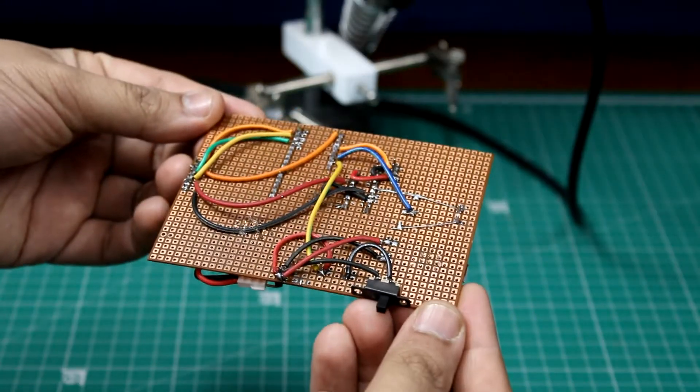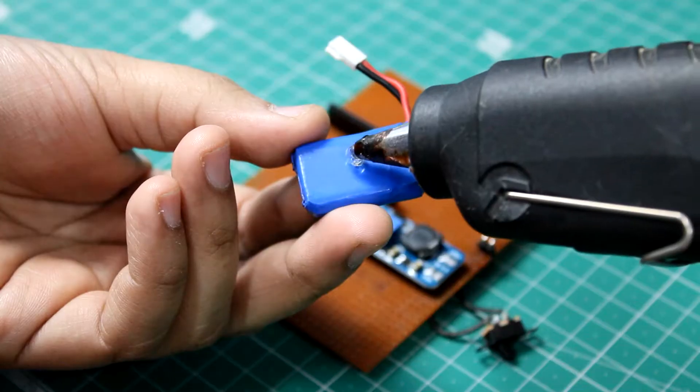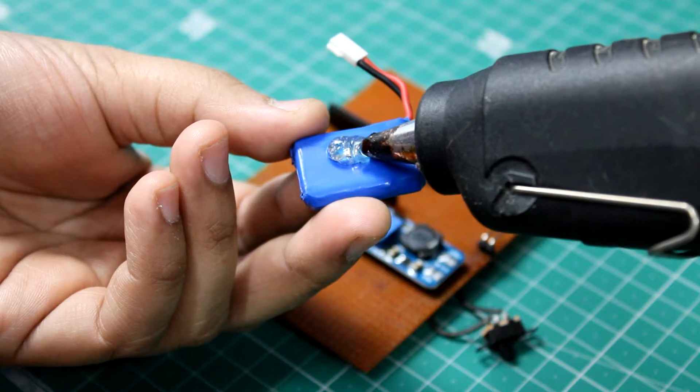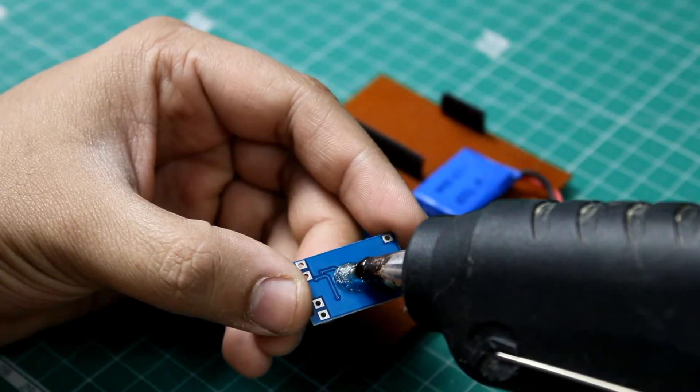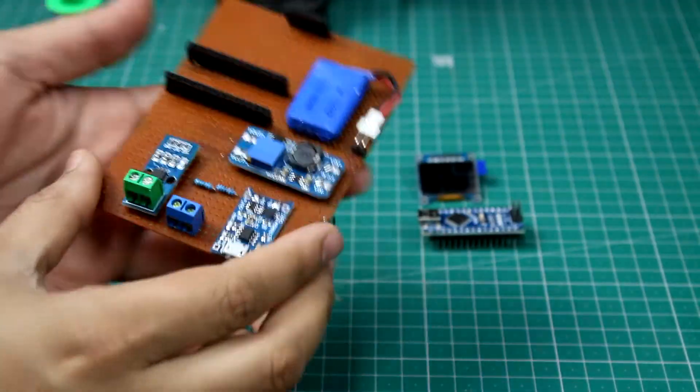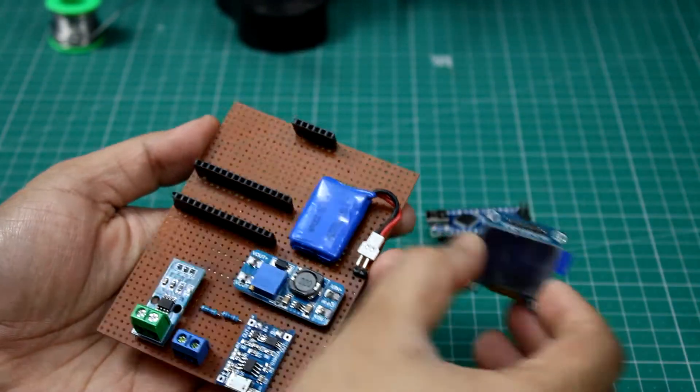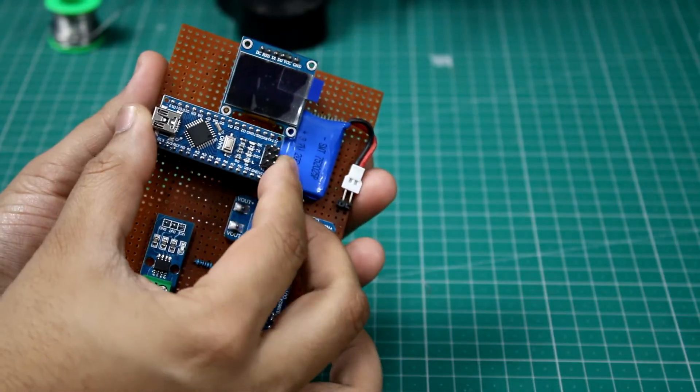And the PCB was complete. I used hot glue to attach the LiPo battery, power switch, and the TP4056 module in place. Then I placed the OLED display module and the Arduino in place and turned on the switch.